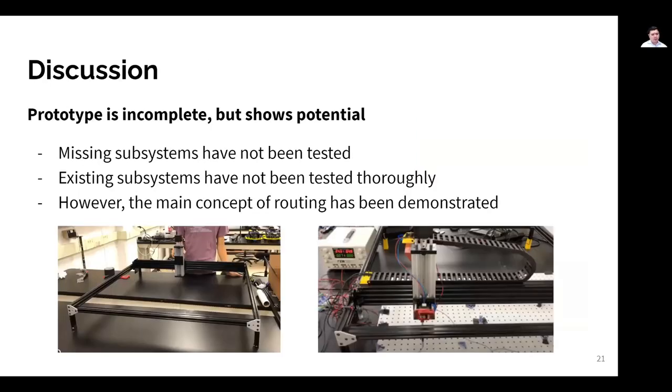So even though our prototype is incomplete, we did show potential. We were able to effectively demonstrate that the routing process that we identified was feasible. This was a big step up from previous attempts at wire manipulation, which were both expensive and not economically suitable. So despite all this, we are still missing some subsystems, and even the subsystems that we do have have not been fully tested. However, we are very satisfied that the main concept of wire routing has been demonstrated.